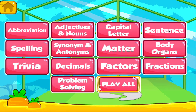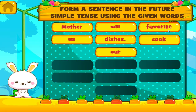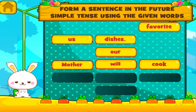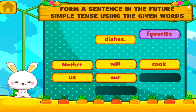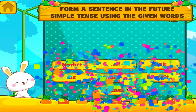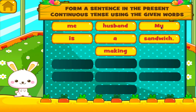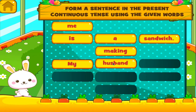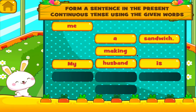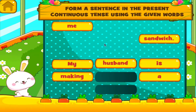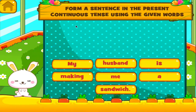Choose the activity you want to play. Sentences. I can see you're getting better at this. Hey, you're really good at this.